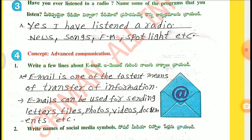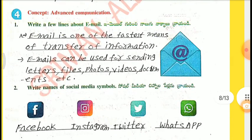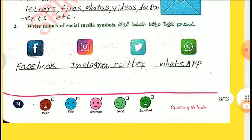Advanced communication — Write a few lines about email. Email is one of the fastest means of transfer of information. Email can be used for sending letters, files, photos, videos, documents, etc. Write names of social media symbols: Facebook, Instagram, Twitter, WhatsApp.